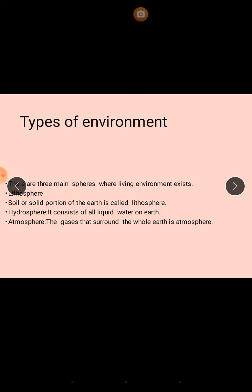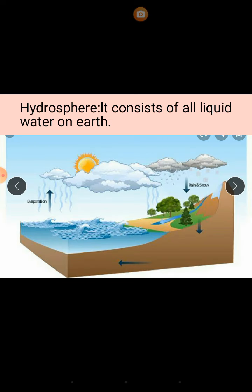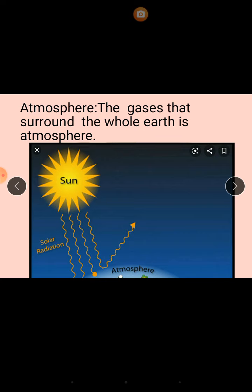There are three main spheres where living organisms exist. Lithosphere: the soil or solid portion of the earth is called the lithosphere. Hydrosphere: it consists of all liquid water on earth, such as rain water, river water, sea water, and ocean water. Atmosphere: the gases that surround the whole earth form the atmosphere, such as air, carbon dioxide, hydrogen, and oxygen. All these gases collectively form the atmosphere.